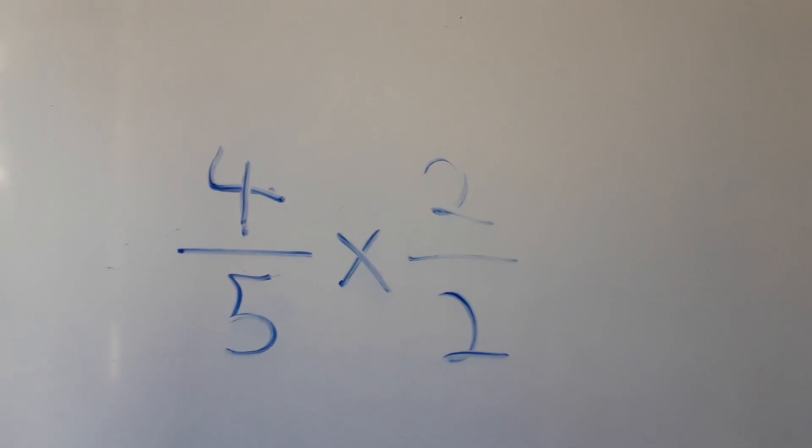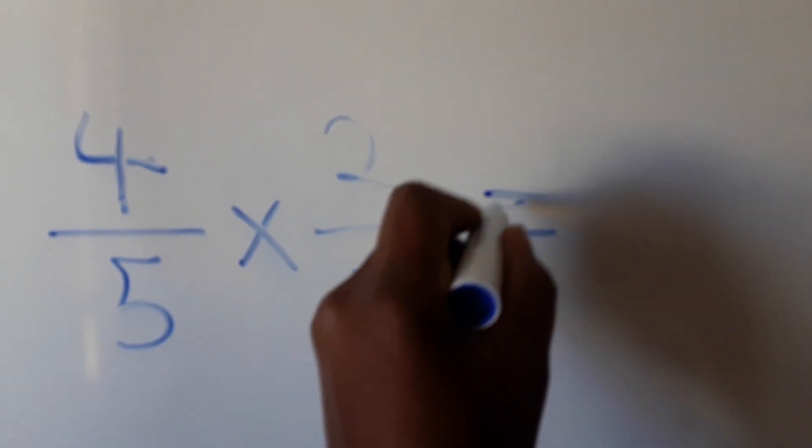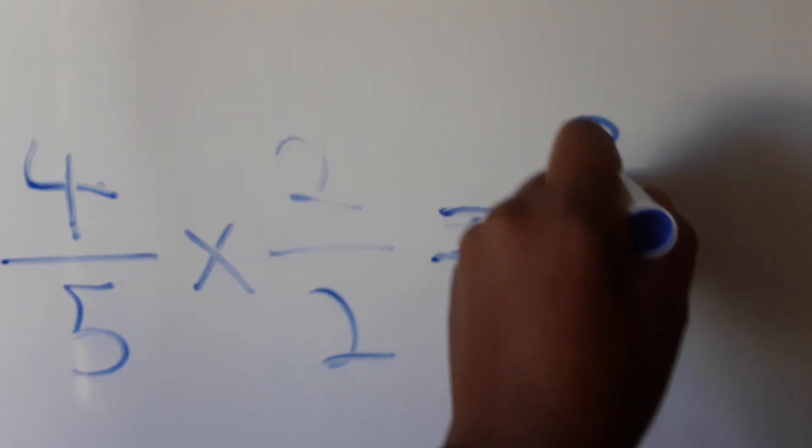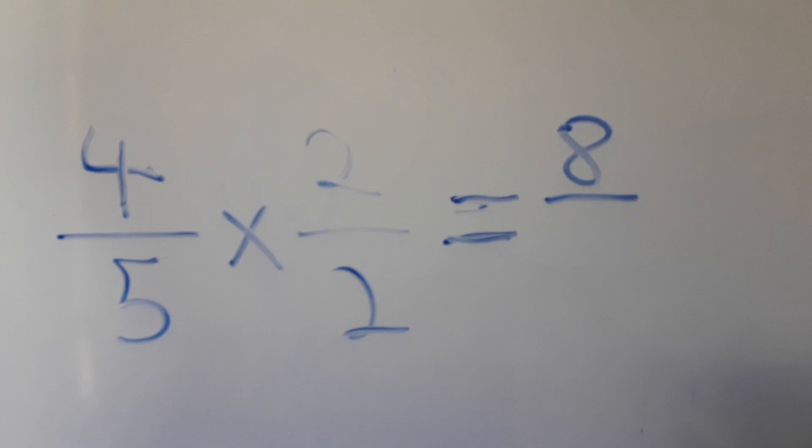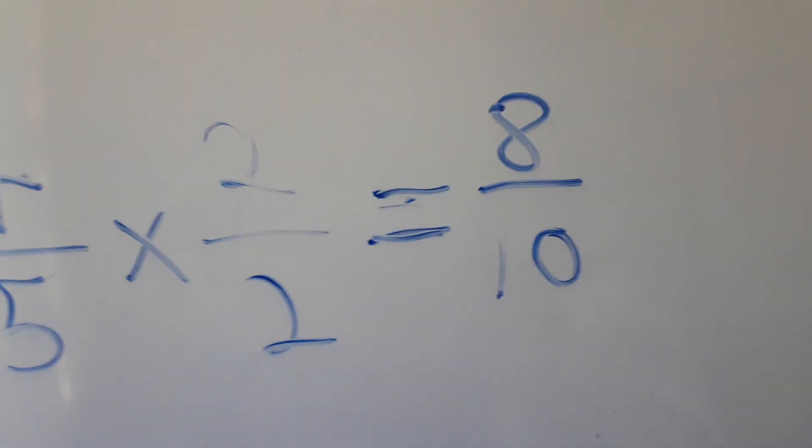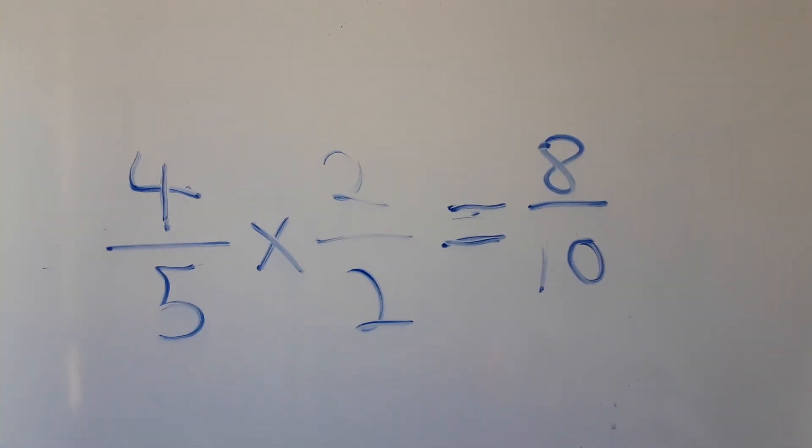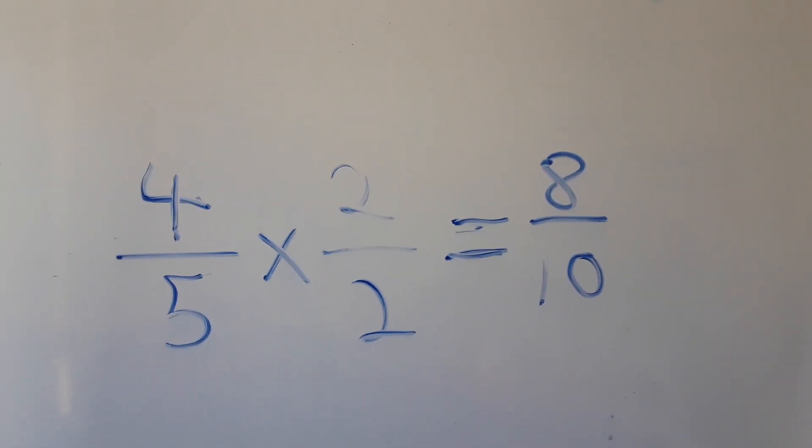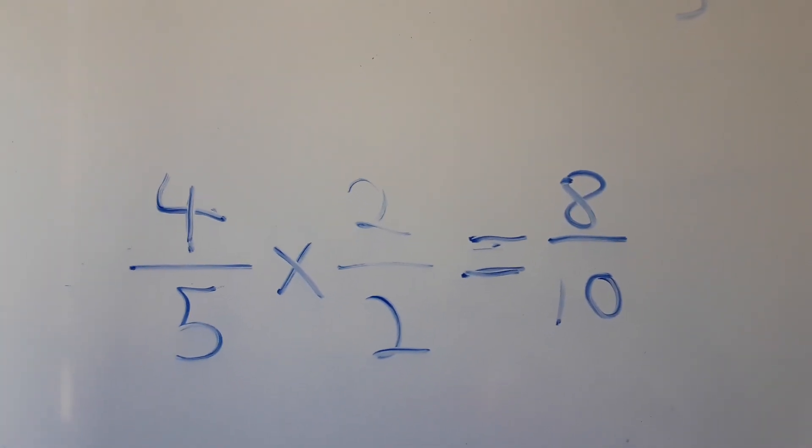So we'll say 4 times 2, which gives us 8, and then 5 times 2, which gives us 10. So it's 8 over 10. If you got that, then you can do more fractions. Thank you very much. Don't forget to subscribe to Online Education Academy for more learning content.